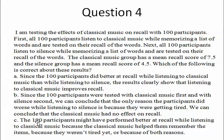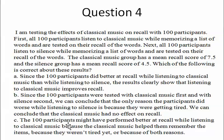Choice C says the results could have happened because of either reason — it could be that classical music helped participants at time 1, it could be that fatigue made participants do worse at time 2, or the difference could have appeared because of both reasons. Choice C is correct because it acknowledges we don't know which one is correct — it could be the effect of classical music, fatigue, or both.